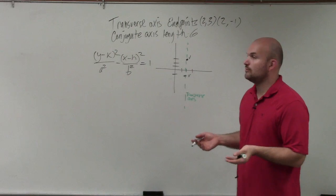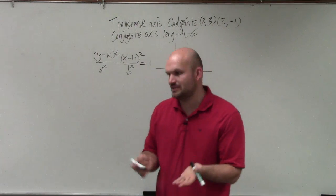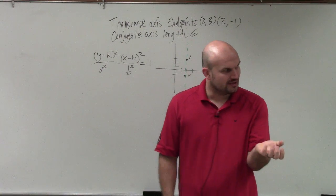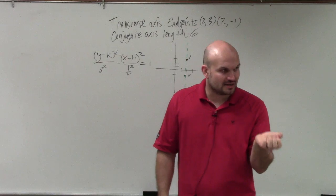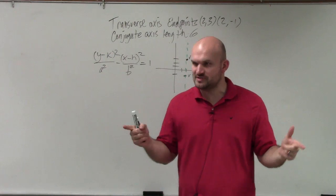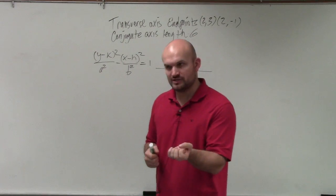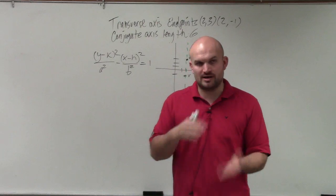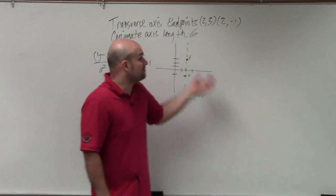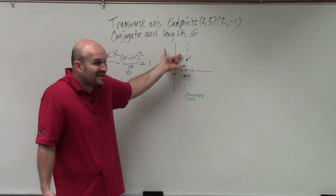So we need to figure out what h and k is, which is the center. Well, again, from our notes, when you guys look at the diagram, the center is always in the middle of your two vertices. The center is always in the middle of your two foci. The center is always in the middle of your two co-vertices, because the distance is equal going left and right or up or down. So I don't have the center, but I have two vertices. So can I find the middle between these two vertices? Yeah, why not? Yeah, just find the midpoint.